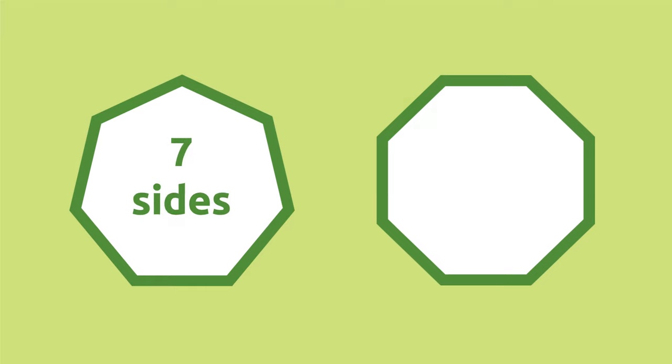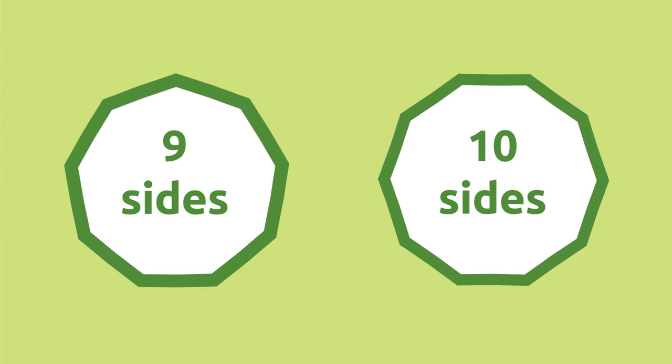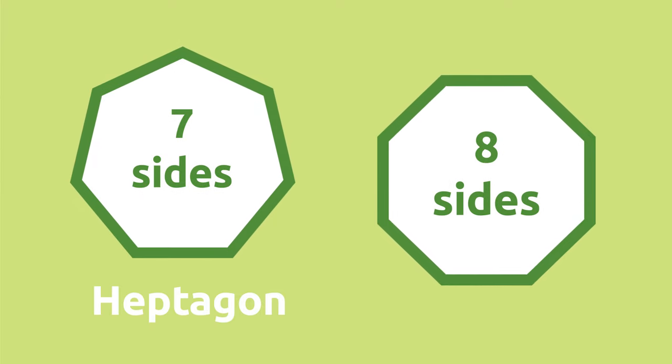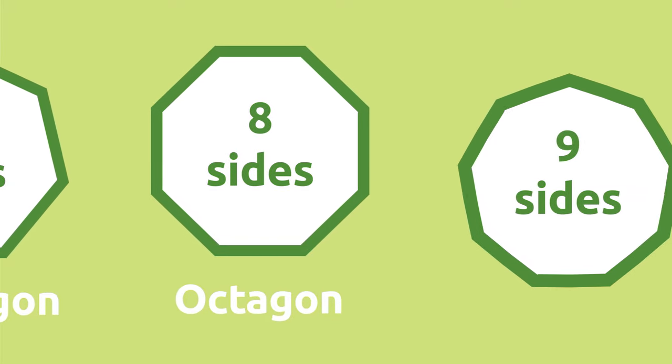There are many types of polygons, but to learn how to read them you need to use the corresponding prefix. It's very easy. A seven-sided polygon is a heptagon, and an eight-sided polygon? It's an octagon, and so on.